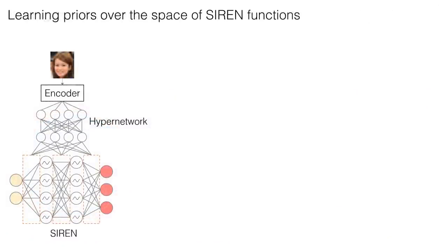Finally, we demonstrate that the space of functions parameterized by SIREN admits the learning of a prior. We leverage a convolutional encoder to regress a latent code, which is then mapped to all parameters of a SIREN via a fully connected hypernetwork.